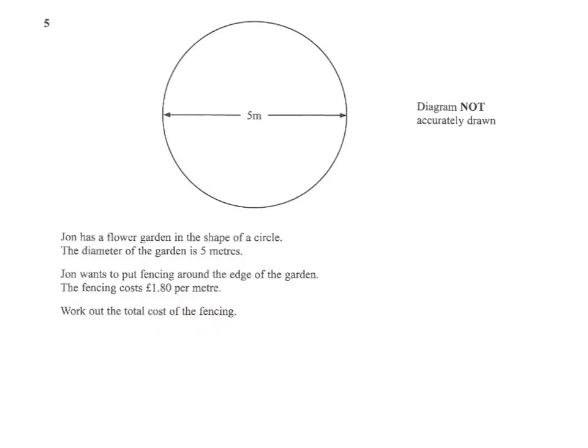We'll need to know the circumference of the circle, and the formula for the circumference of the circle, using the diameter, is pi times the diameter. So when we do that, we will get the length of the circumference. We need to multiply that for the cost times by £1.80.